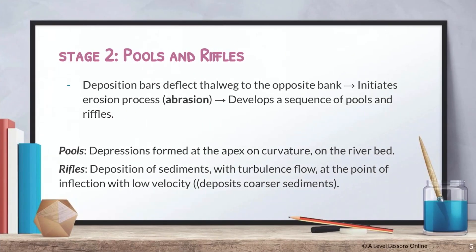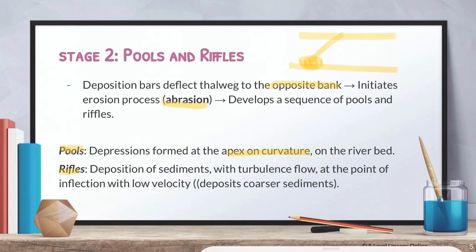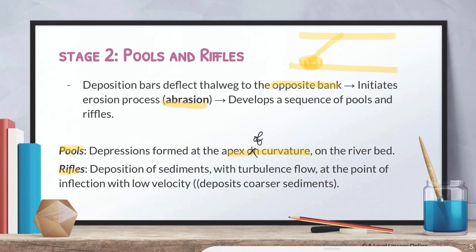When the thalweg deflects, it starts to form pools and riffles. The pre-existing bars of sediment deflect the thalweg to the opposite bank, starting an erosion process known as abrasion. Abrasion takes place, meaning sediments are going to develop. This abrasion forms pools and riffles. Pools are depressions formed at the apex of curvature on the river bed — not on the river bank. It deflects to the bank, but does erosion on the bed, which is why it's abrasion and not hydraulic action.